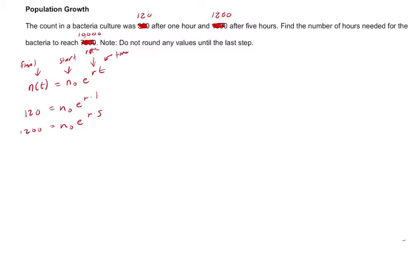So this is useful because we can say all right, well the ratio here is 1200 to 120 and that's the same as the ratio of these two equations, e to the r times five. And what's beautiful about that is when we divide, we realize oh these starting populations are relevant, those divide to one.